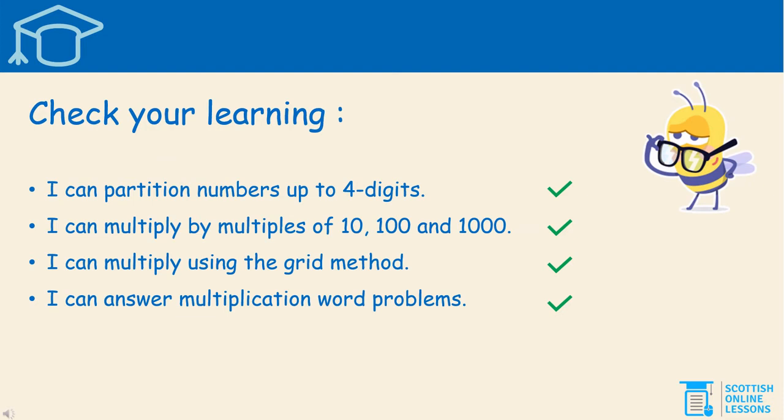It's now time to check your learning. Let's take the success criteria from the beginning of this lesson and see if we've been able to do these things. If you can say to yourself 'yes, I can do that,' then you've been successful and you've achieved your learning intention. The criteria are: I can partition numbers up to four digits — that was essential to insert numbers into the grid. I can multiply by multiples of 10, 100 and 1000. I can multiply using the grid method. And I can answer multiplication word problems. Assess — have you met your success criteria today?